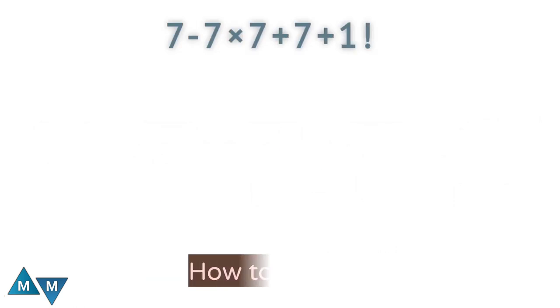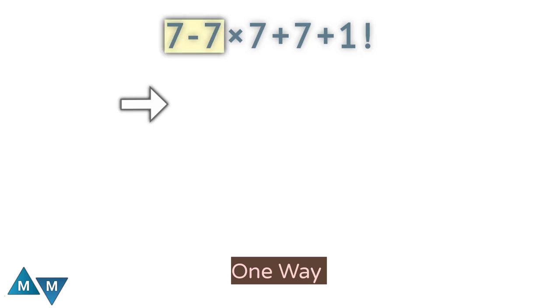Let's see step by step how to solve it. We've seen a lot of people do it the following way. Look at 7 minus 7 is 0, right? It's going to be 0 times 7 plus 7 plus 1 factorial.